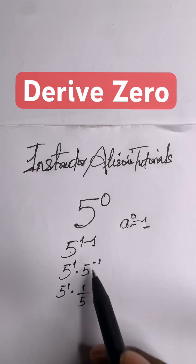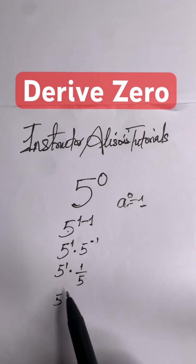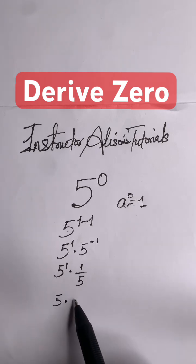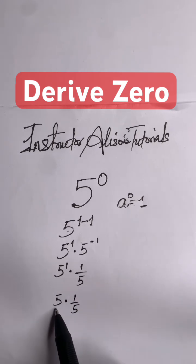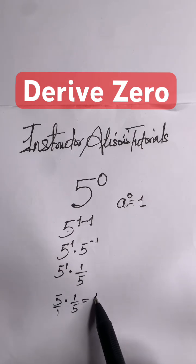The negative exponent changes to the reciprocal. So 5 to the power of 1 is 5 times 1 over 5. This is the same as 5 over 1 times 1 over 5.